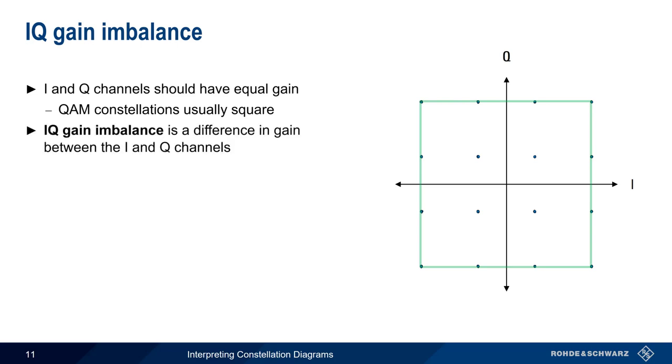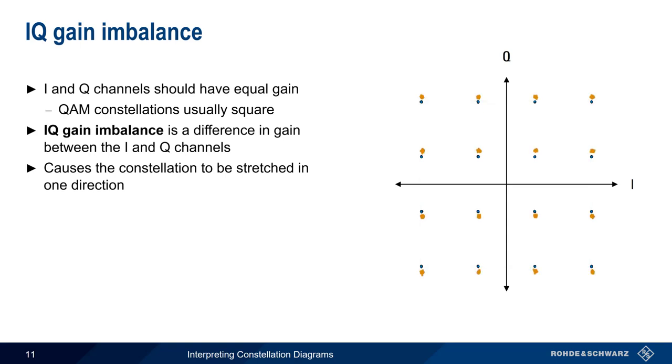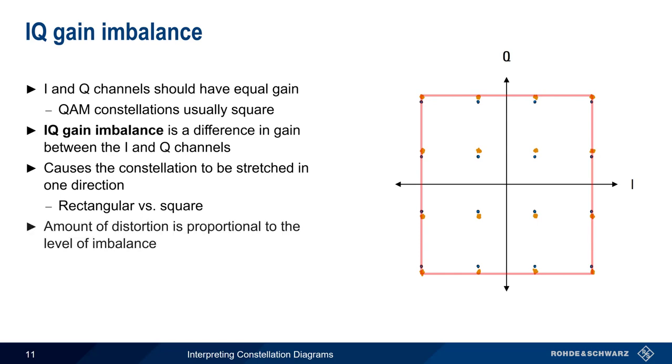IQ gain imbalance occurs when there's a difference between the gain of these two components. IQ gain imbalance is relatively easy to diagnose in constellation diagrams, because it causes the constellation to be stretched, that is, it becomes more rectangular than square. This distortion, or stretching, is proportional to the gain imbalance, and higher levels of gain imbalance lead to increased stretching of the overall constellation.